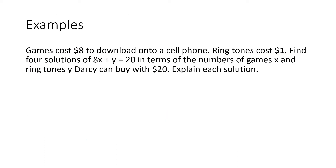Here we have an example: Games cost $8 to download onto a cell phone. Ringtones cost $1. Find four solutions of 8x plus y equals 20 in terms of the number of games (x) and ringtones (y) that Darcy can buy with $20. Explain each situation. The first thing we need to do is rewrite this equation so we can solve for y — we need this written so that it is y equals something. We're going to subtract 8x from both sides, so that means y equals 20 minus 8x.